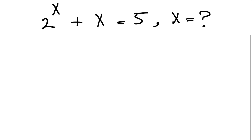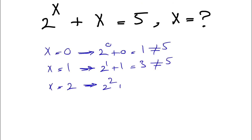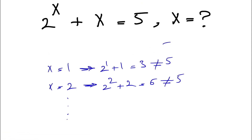We can try a bunch of values — if we put 0, we get 2 to the 0 plus 0 which is 1, not equal to 5. If we do x equals 1, we get 2 to the 1 plus 1 which is 3, not equal to 5. For x equals 2, we get 2 to the 2 plus 2 which is 6, again not equal to 5. If we continue doing this we'll see it's not going to work, and this is where we start with the Lambert W function.